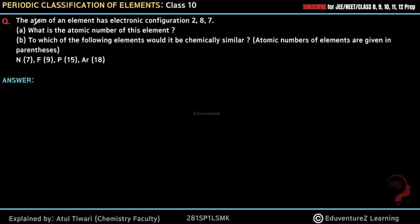Hello everyone, our question is: the atom of an element has electronic configuration 2,8,7. (a) What is the atomic number of this element? (b) To which of the following elements would it be chemically similar? Atomic numbers of elements are given in parentheses.